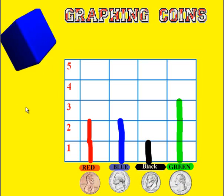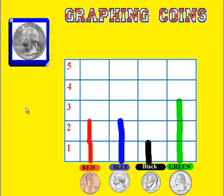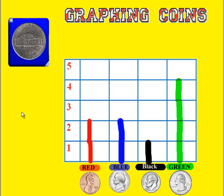Let's click on the cube again — we come up with another quarter. Pick up the green pen and draw another line for the quarter. So now you should have one, two, three, four quarters in our graph. Let's click on the cube again — this time we come up with another nickel. What color is that? Blue. So we want to have one, two, three. Pick up the blue pen and draw another line. So now you have two pennies, three nickels, one dime, and four quarters.